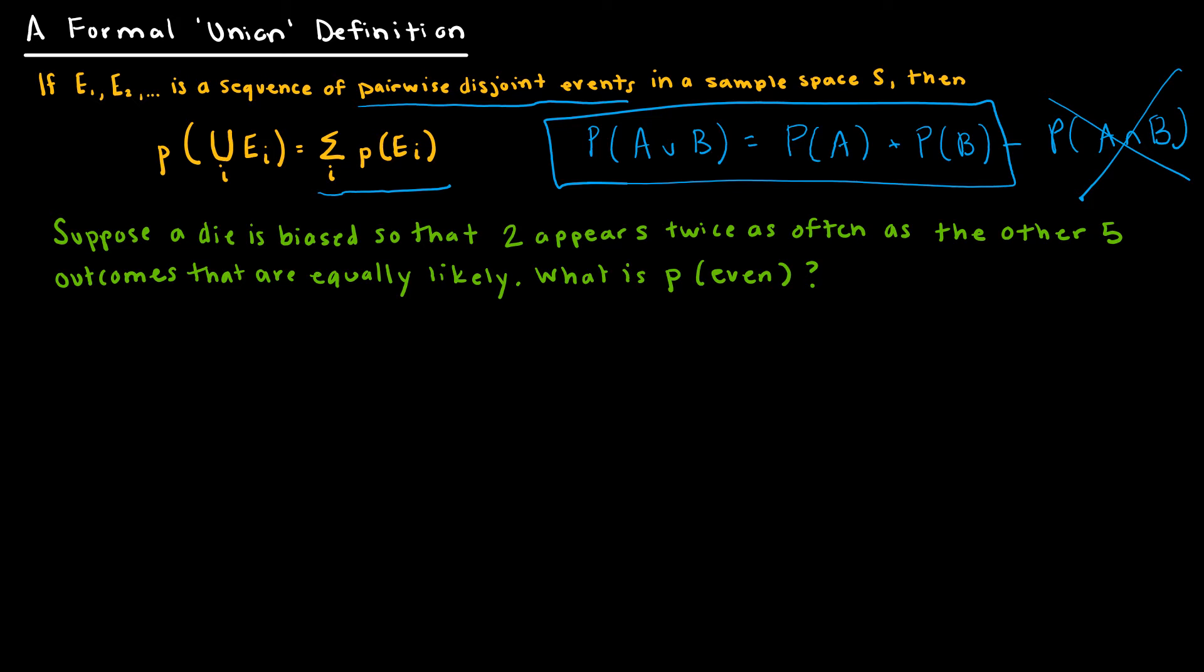Let's look at an example like our last example, but where we have to assign the probabilities and then find the union. Suppose a die is biased so that 2 appears twice as often as the other 5 outcomes. I've got 1, 2, 3, 4, 5, 6 as my outcomes on a die. 2 appears twice as often, and all of these just occur one time. So that's 7 total outcomes. This would be 1/7, 2/7, 1/7, you get the idea.